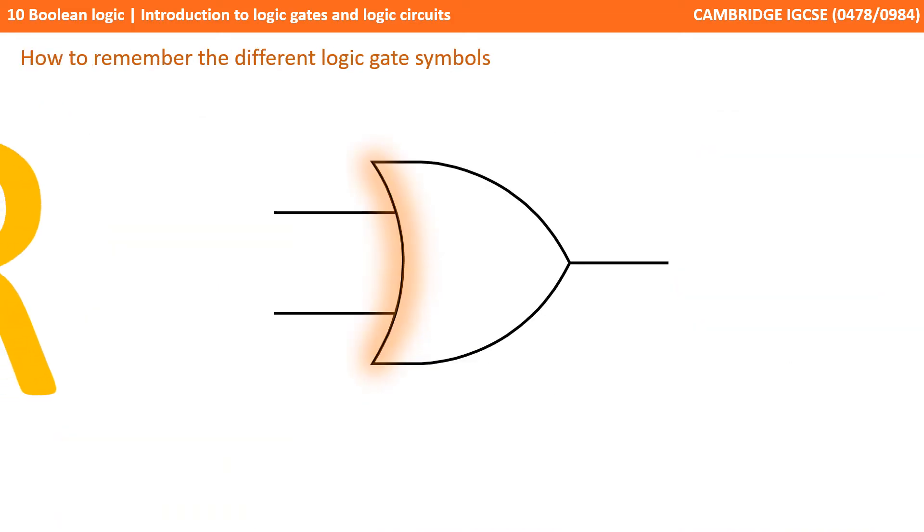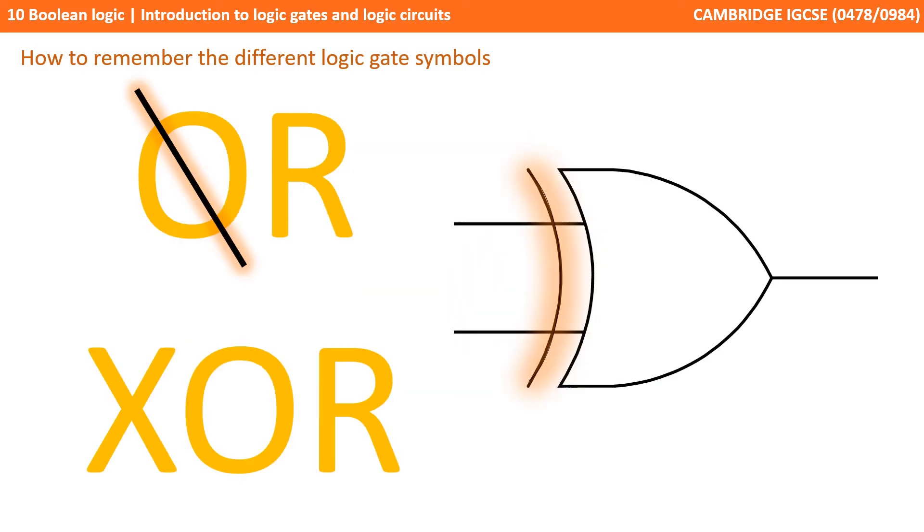Now we've provided a handy way here of trying to remember the symbols. I tend to think of the OR symbol by taking the curve from the letter O of the word OR, and that reminds me of the OR symbol. XOR is the same as the OR symbol, but we have an extra curve at the front there on the left. And I think of that as a line being crossed through the O for XOR.